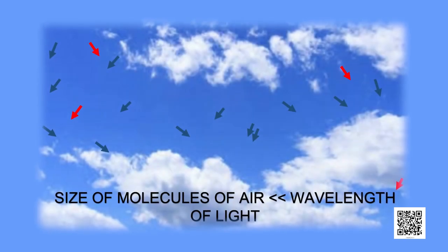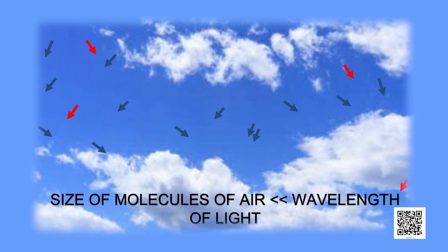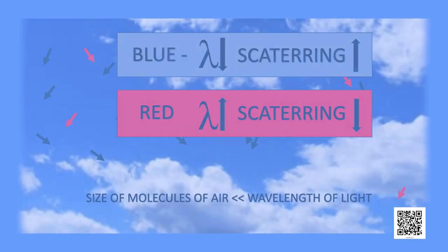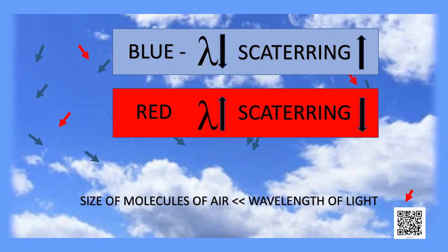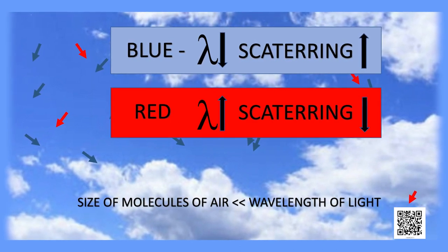This fact answers why the colour of clear sky is blue. The molecules of air and other fine particles in the atmosphere have size smaller than the wavelength of visible light. These are more effective in scattering light of shorter wavelength — blue — and not red. When sunlight passes through the atmosphere, the fine particles scatter the blue light more strongly than the red, so blue light enters our eyes and we see the sky as blue. If the earth had no atmosphere, there would be no scattering and the sky would look absolutely dark. Indeed, the sky appears dark to passengers flying at very high altitudes.